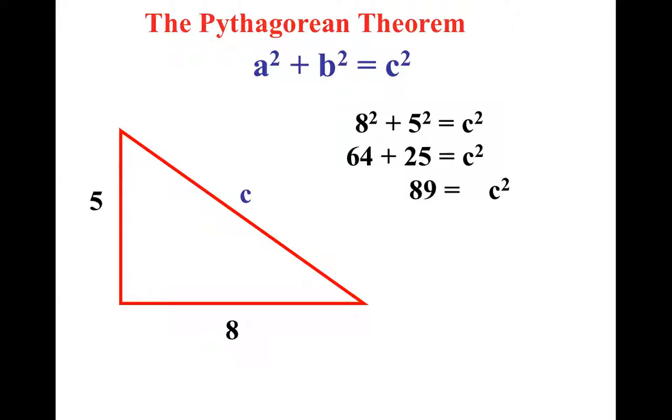All right. In this situation, notice it's not a perfect nice number. Because what two identical numbers multiply to get you 89? Nobody actually knows. So when we take the square root, you could use a calculator or a chart and you would get your answer, which would be about 9.434.